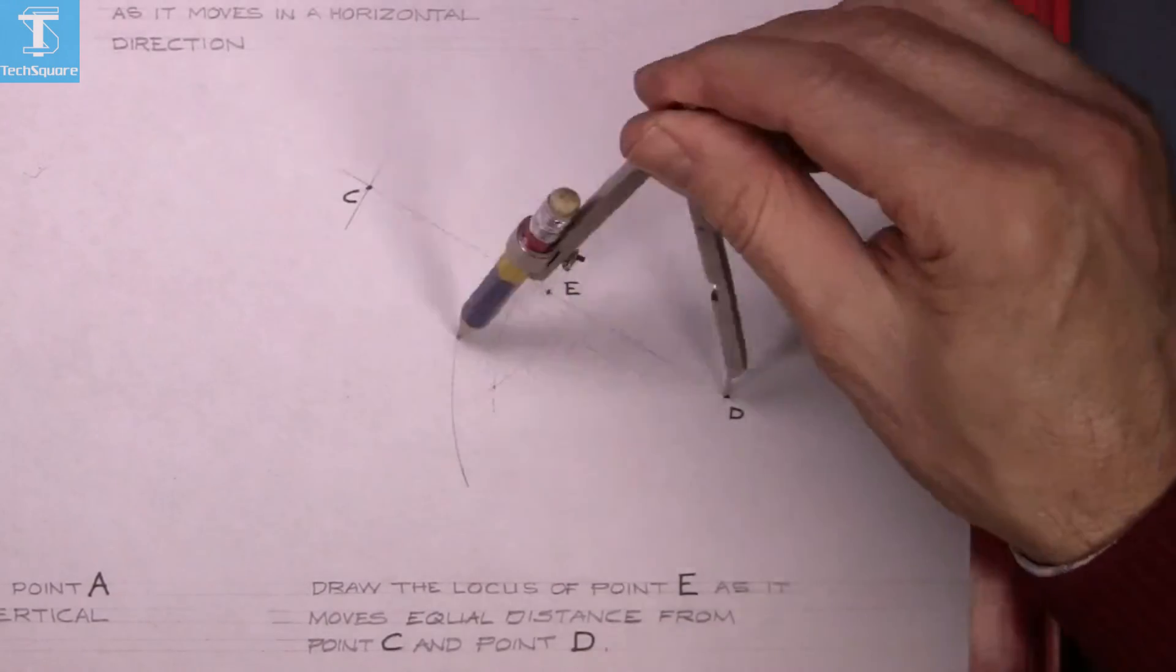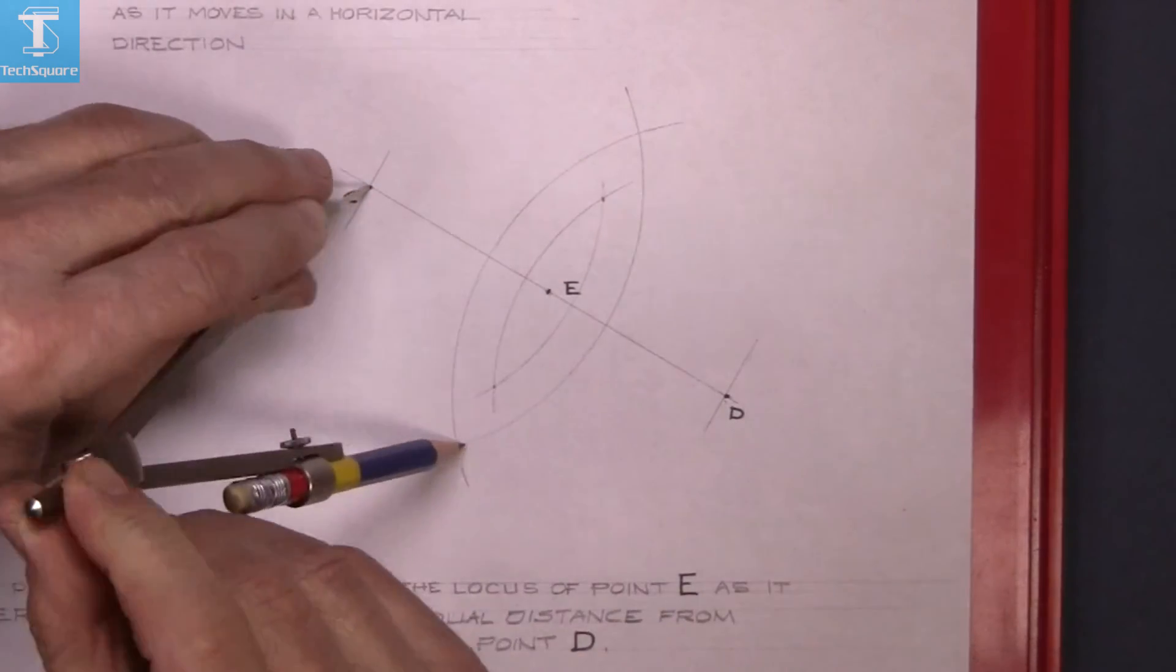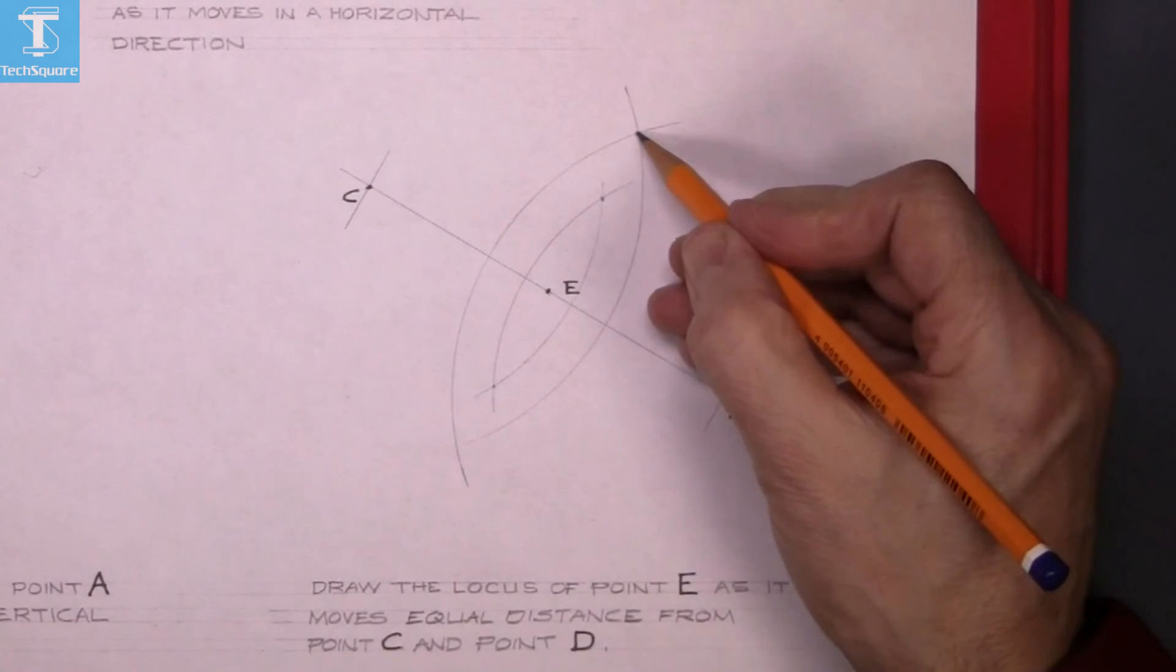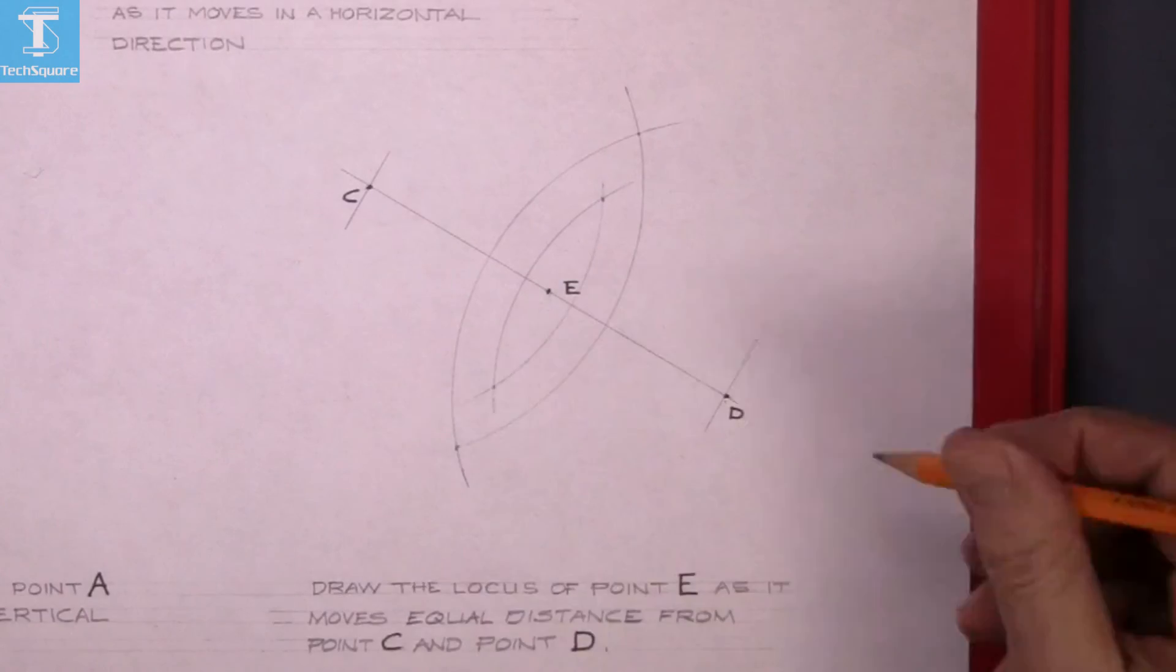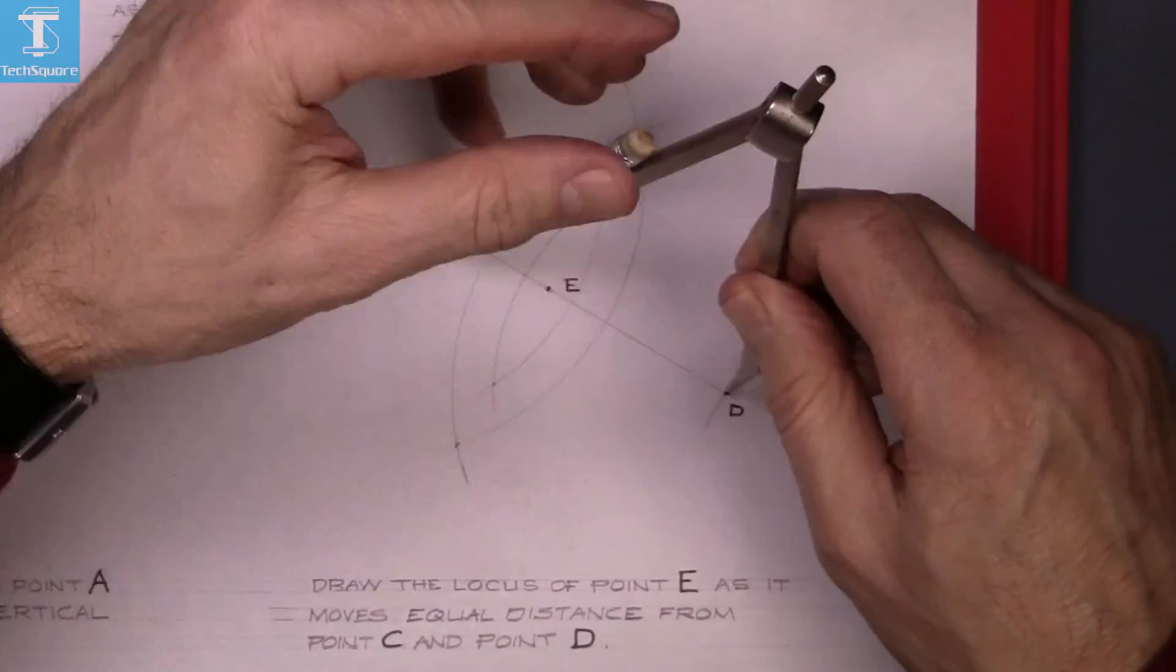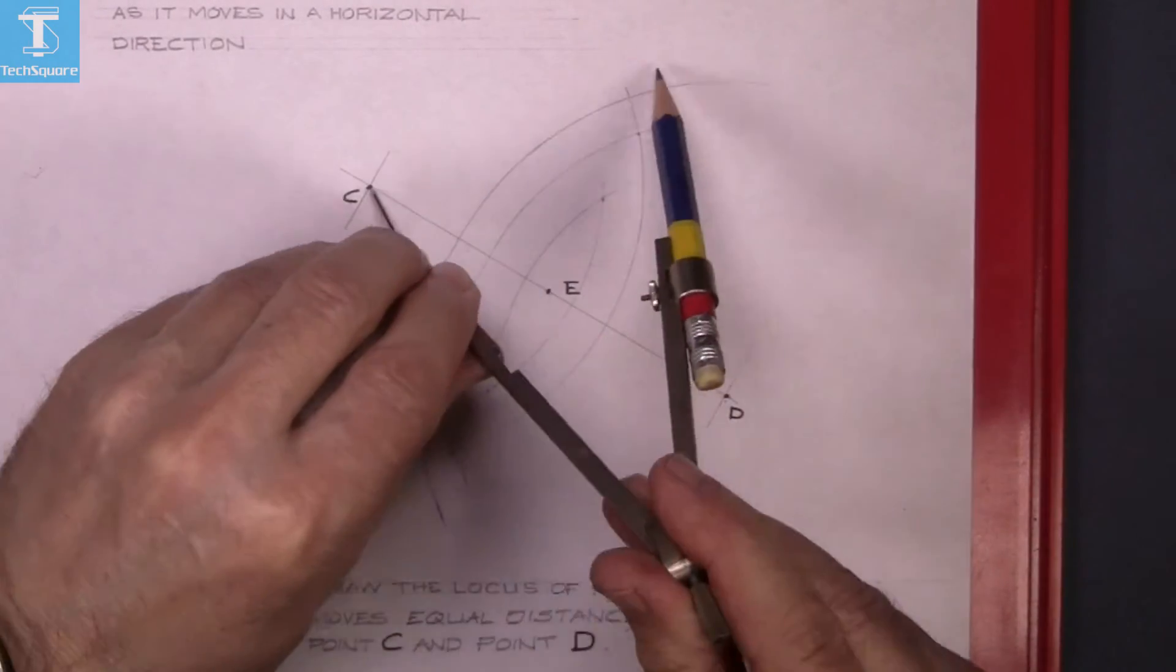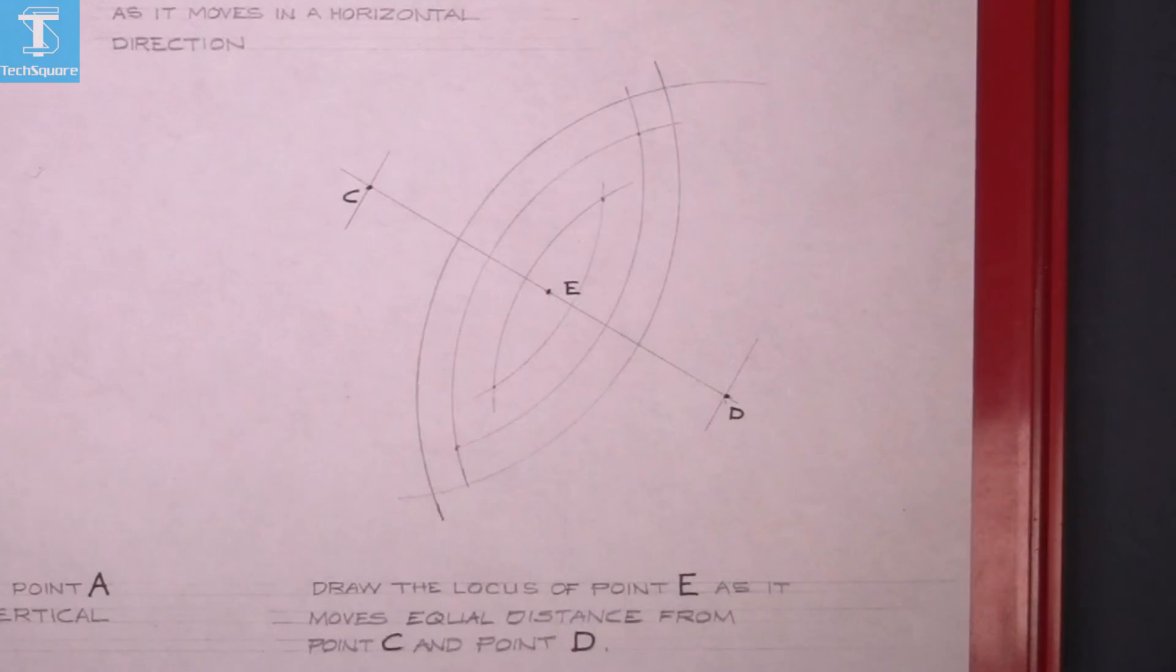Set the compass again to any measurement. Do the same again. And now we have another point. So we can continue that for as often as we want to. But in this case, the path that's traced by this is going to be a straight line.